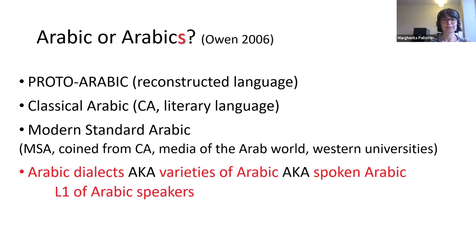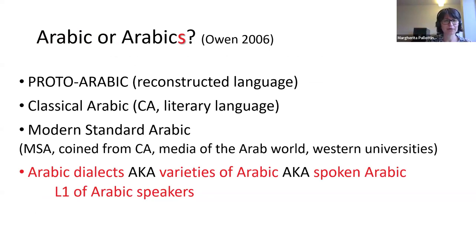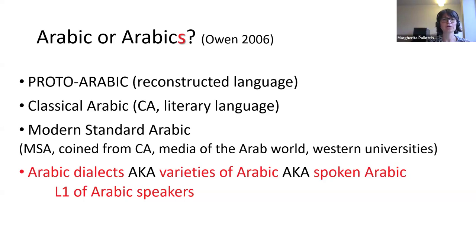There is a confusion about what Arabic is because it refers to many different things. There is a reconstructed language called proto-Arabic, which is the equivalent of Indo-European on a genetic level. Then there is Classical Arabic, a literary language used to write poetry and compose the Quran. There is also Modern Standard Arabic, coined from Classical Arabic, used by journalists in the Arab world and generally taught in Western universities.